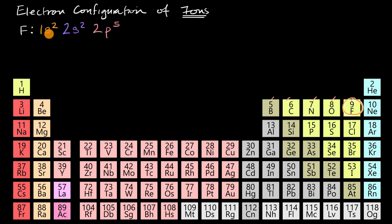So if that's the electron configuration for fluorine, what do you think the electron configuration for fluoride would be? So this is just the anion that has one extra electron. It is a negatively charged ion. Pause this video and try to figure it out.